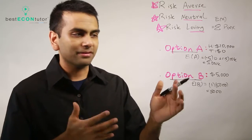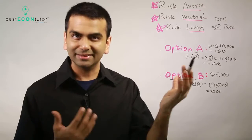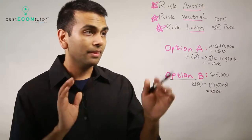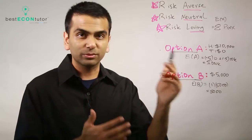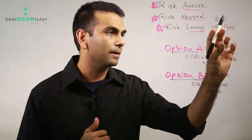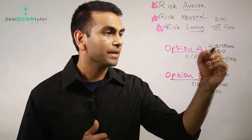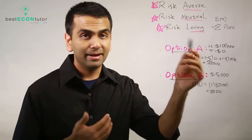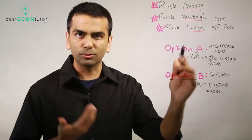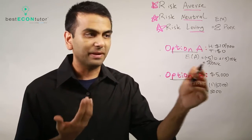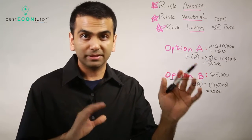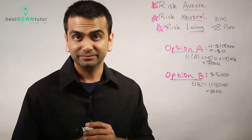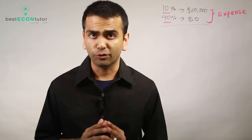A risk loving person would say: I might as well try to get the ten thousand — and if I lose, at least I had the chance. They'd pick Option A. Now, if we switched the numbers so Option A offered one hundred thousand, the expected value would be fifty thousand, and even a risk averse person might choose it — that doesn't mean they're risk loving, they're just picking the higher expected value.